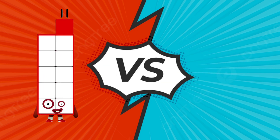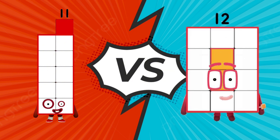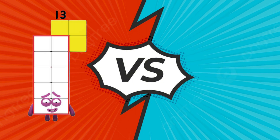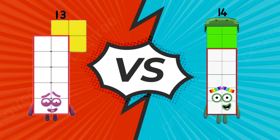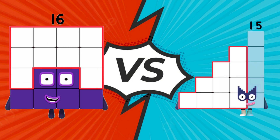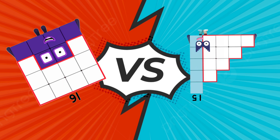Number block 11 likes hot. Number block 12 likes cold. Number block 13 likes hot. Number block 14 likes cold. Number block 16 likes hot. Number block 15 likes cold.